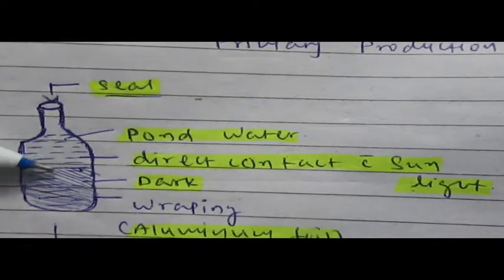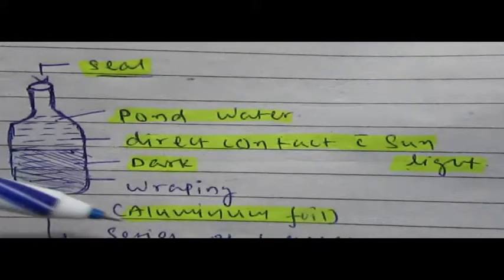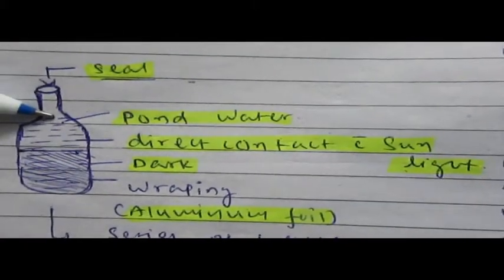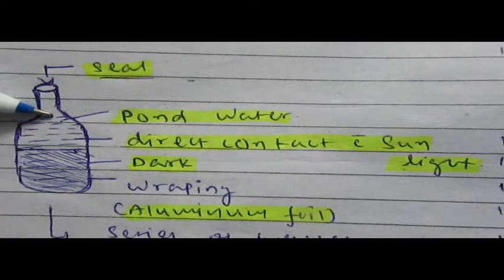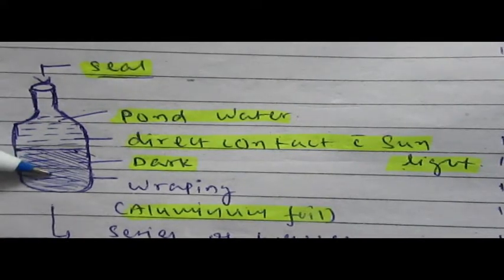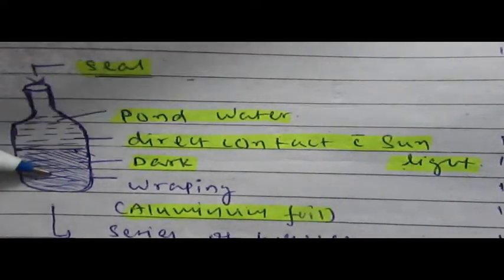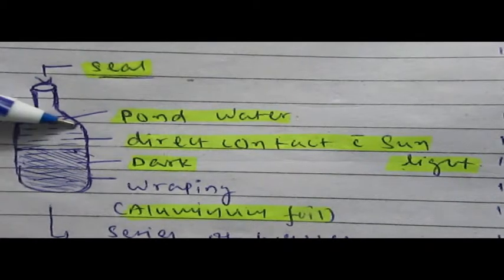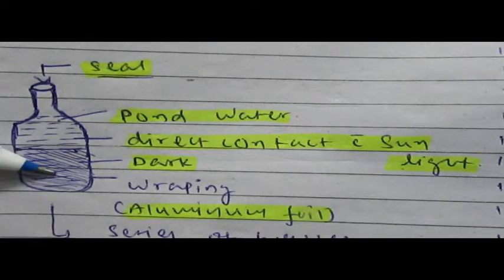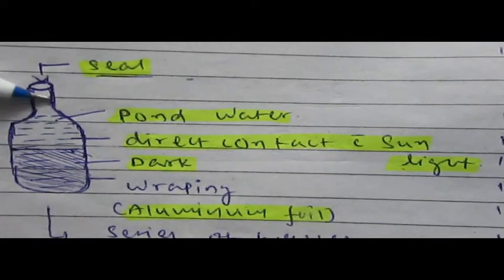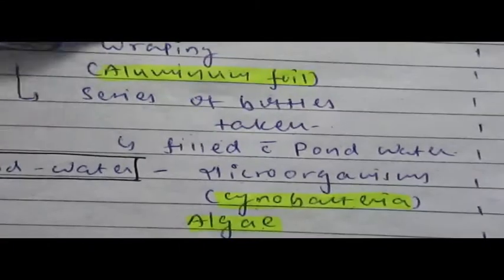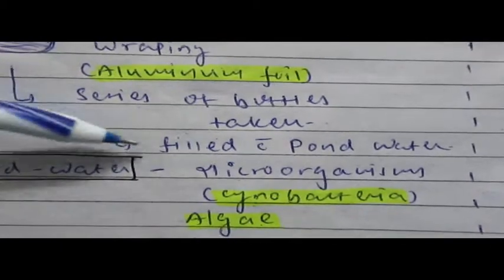Half of the bottles are wrapped with aluminum foil and half are in direct contact with sunlight, whereas the rest are not in contact with sunlight. So they are categorized as light bottles and dark bottles, and initially they are all filled with pond water.